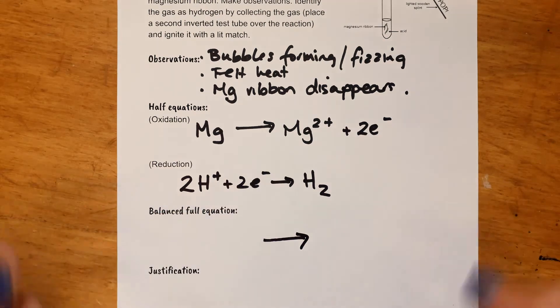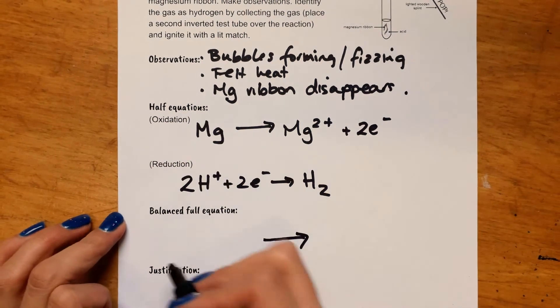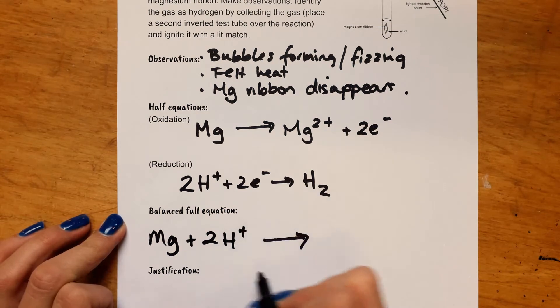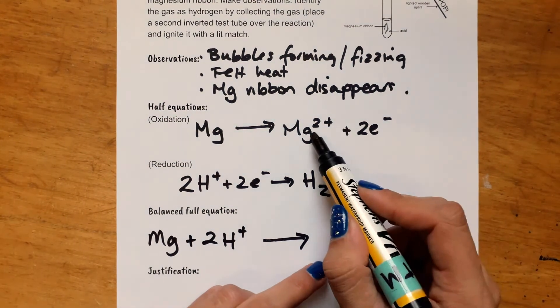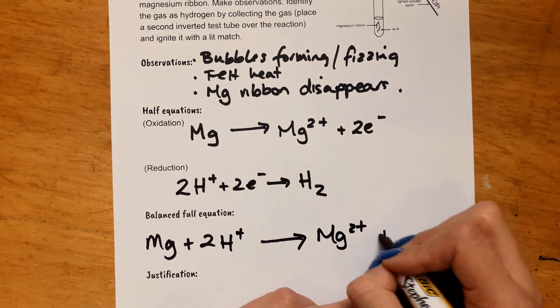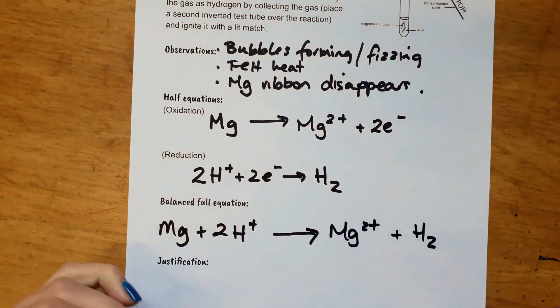So we get left with one magnesium reacting with two hydrogen ions. A transfer of electrons takes place and then we get magnesium ions formed and hydrogen gas. Chloride in this is just like a spectator ion. It's not actually involved in the reaction.